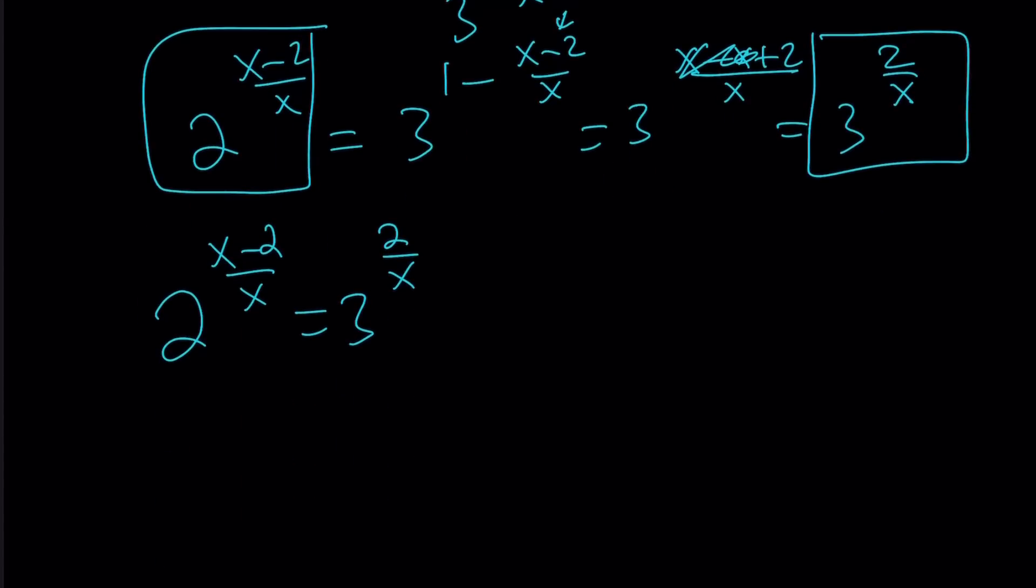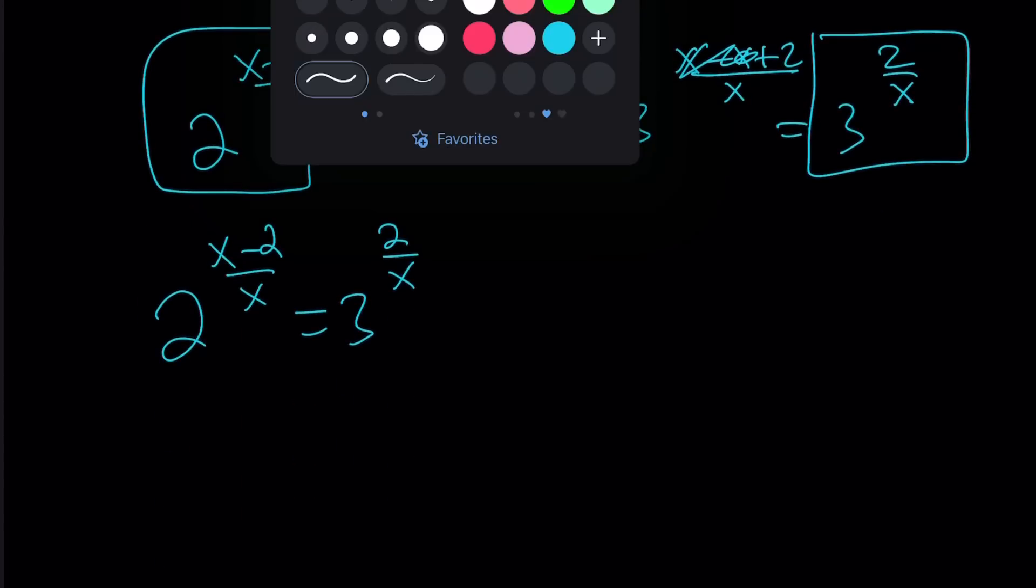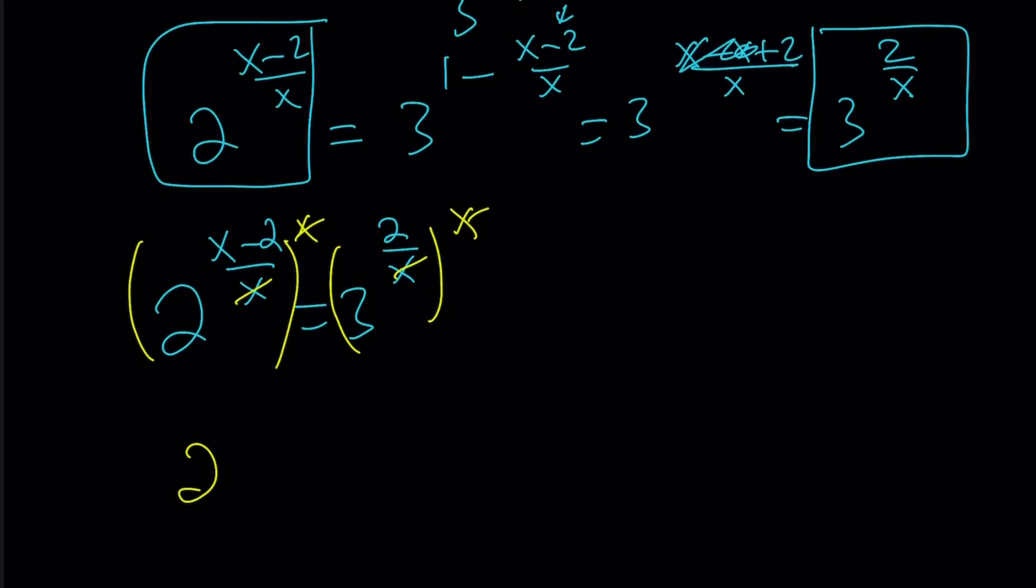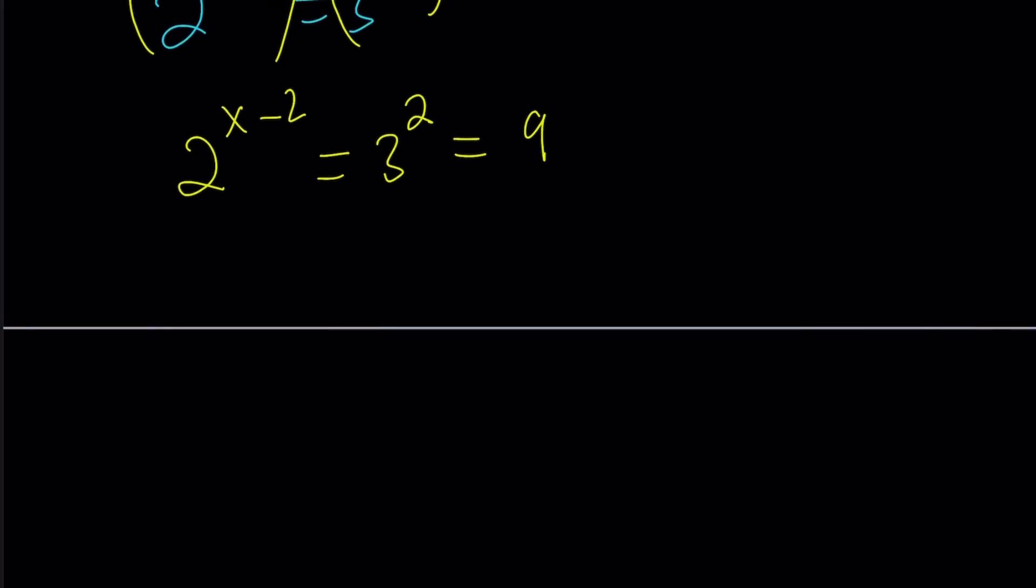Now we have this equation. So we can go ahead and raise both sides to the power x to get rid of the 1 over x. So this cancels out. This cancels out. We end up with the following: 2 to the power x minus 2 equals 3 to the power 2, which is 9. What am I looking for? I'm looking for 2 to the power x. So this means 2 to the power x divided by 2 to the power 2 is 9. This means 2 to the power x equals 4 times 9, which is 36.